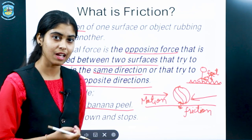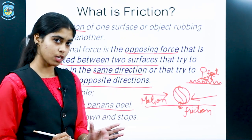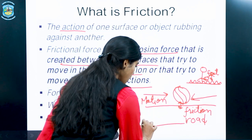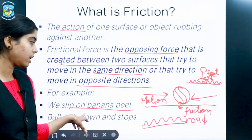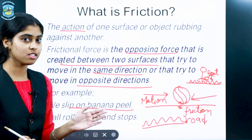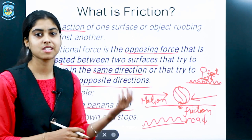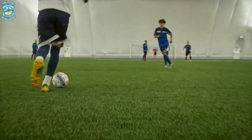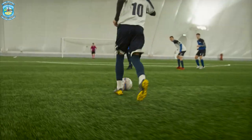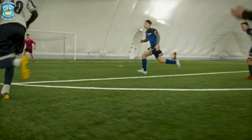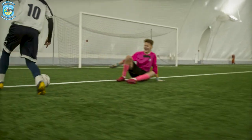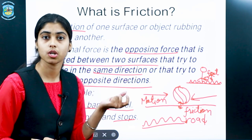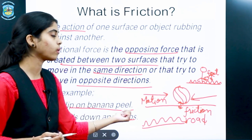Why do we slip on a banana peel? The surface of a road is very rough compared to that of a banana peel, whose surface is very smooth. Friction says that the smoother the surface, the less is the friction — that is why we fall down. Another example: a ball rolls and stops. If we kick the ball, it will go a certain distance but then stop — it will not roll continuously. Why? Because friction is a force that opposes the ball's motion.